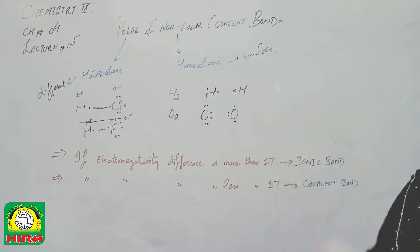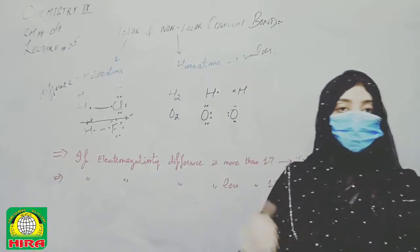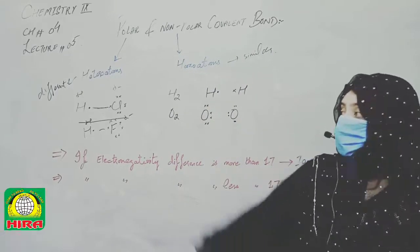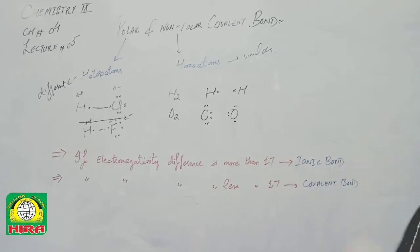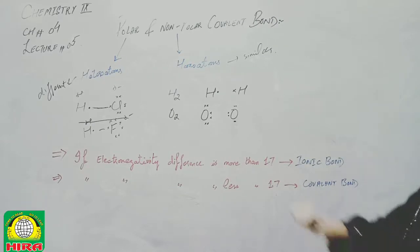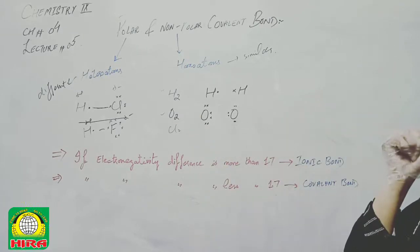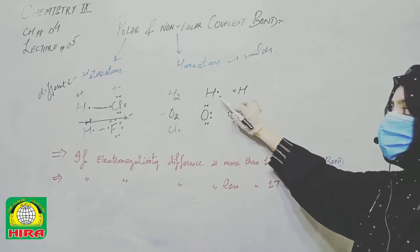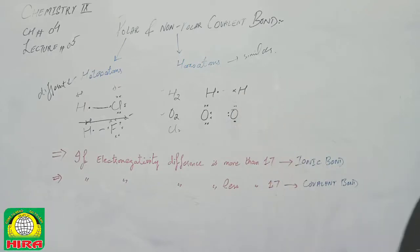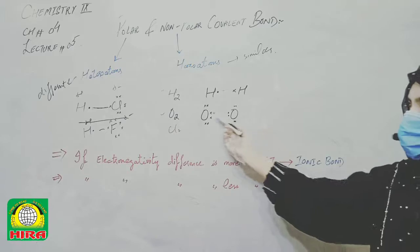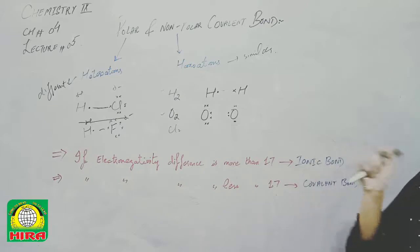Now let's talk about non-polar covalent bonds. The key difference is that polar bonds form between different atoms, while non-polar bonds form between similar atoms. When both atoms are the same, their electronegativity values are equal, so there is no electronegativity difference. Examples include H2, O2, Cl2, and Br2 — in all these cases, both atoms are identical, so the shared electrons are attracted equally.